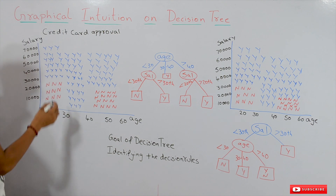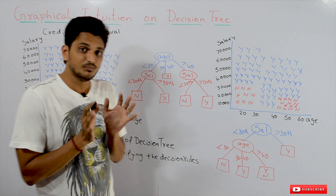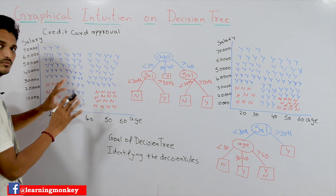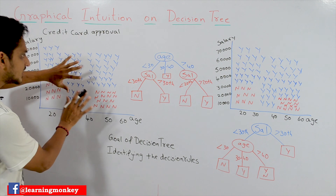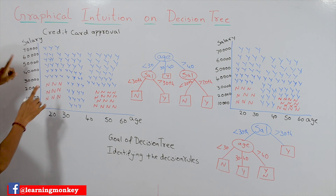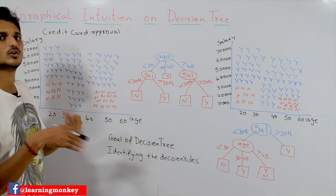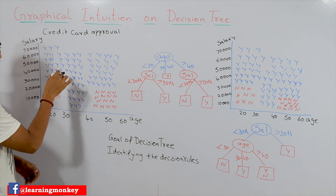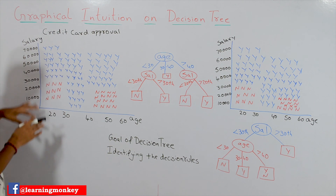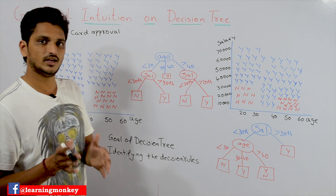Coming to today's class, let's take an example dataset and understand what decision trees are. The example dataset we consider here is a credit card approval dataset. For understanding purposes we are taking a simple dataset, but in reality datasets are not that simple. Our dataset has two columns: age and salary. Based on age and salary, it was determined whether the credit card is approved or not. 'Y' means yes, credit card has been approved; 'N' means no, credit card has not been approved.